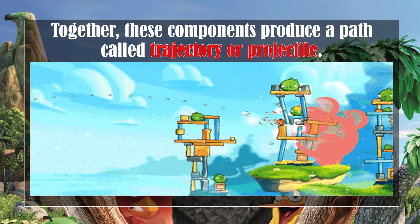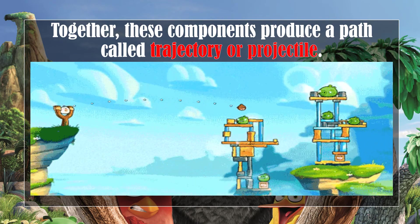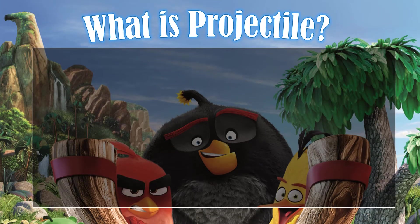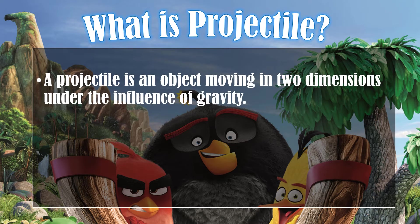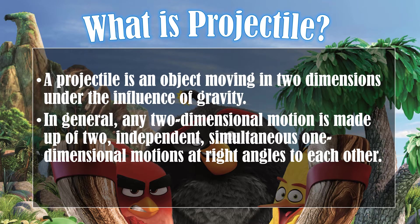Together, these components produce a path called trajectory or projectile. A projectile is an object moving in two dimensions under the influence of gravity. In general, any two-dimensional motion is made up of two independent, simultaneous one-dimensional motions at right angles to each other. It is also a combination of horizontal motion with constant velocity and vertical motion with constant acceleration.